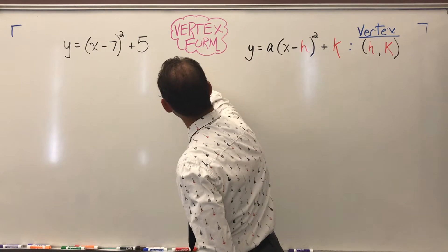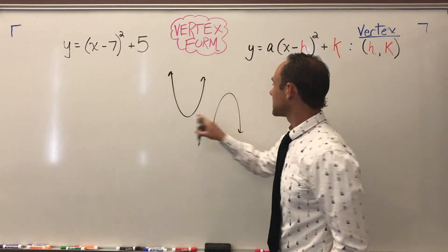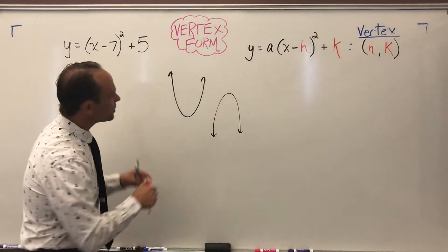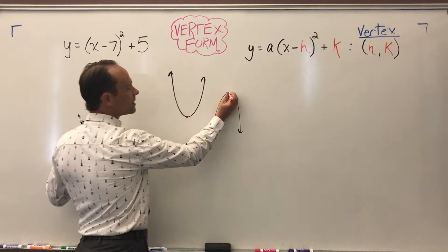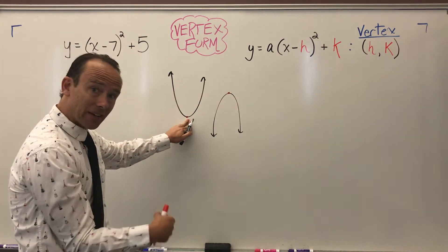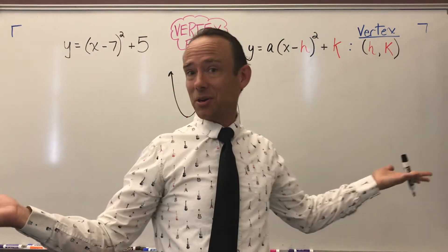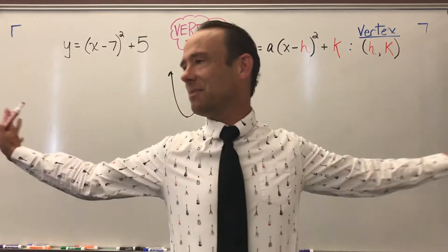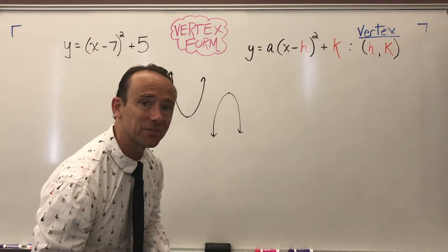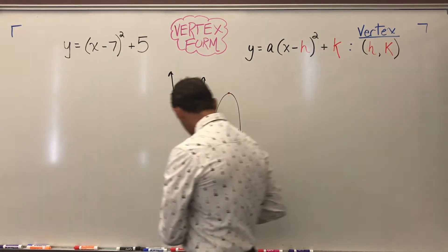Let's first look at two parabolas quickly. You have one that has a minimum and one that has a maximum. If you highlight that vertex, you'll notice it's either going to be the smallest value or the biggest value — it's the bottom of the valley or the top of the mountain. We're going to take advantage of that. Here's the first method.